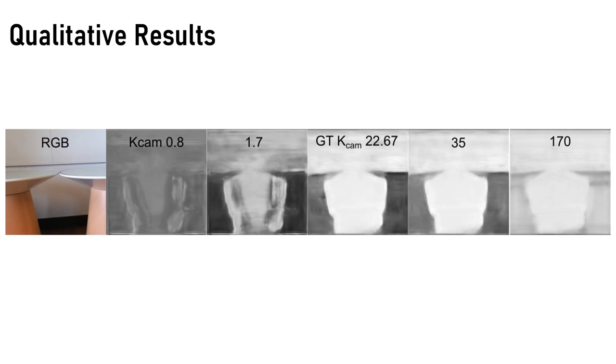Finally, we obtain an image of an object and try to get the depth image. The actual Kcam value of this camera was 22.67, and we can see that if the Kcam value we used deviates from the actual Kcam value, the results get more and more unreliable.